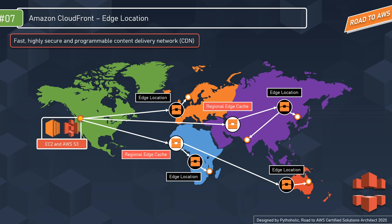Coming back to the visualization, the main origin is in the USA, exposing EC2 or S3 for users globally. Even if users are in India or Australia, they can access the content at a much faster rate compared to a single server distribution. Edge locations are placements for proxy servers, and regional edge caches store frequently accessed data for better performance.